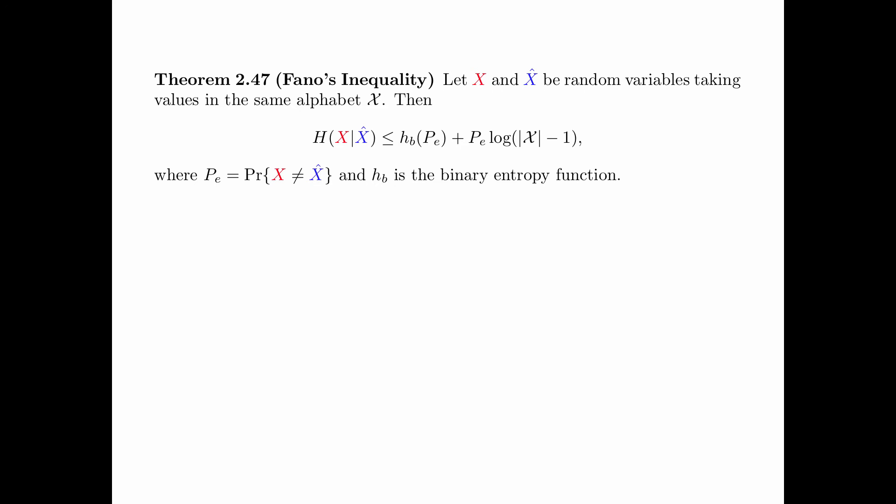Now we discuss Fano's Inequality. Let x and x-hat be random variables taking values in the same alphabet. Then the conditional entropy of x given x-hat is upper bounded by H_B(P_e) plus P_e times log of the size of the alphabet minus 1, where P_e, called the error probability, is equal to the probability that x is not equal to x-hat. That is, x-hat is the wrong estimate of x. And H_B is the binary entropy function.